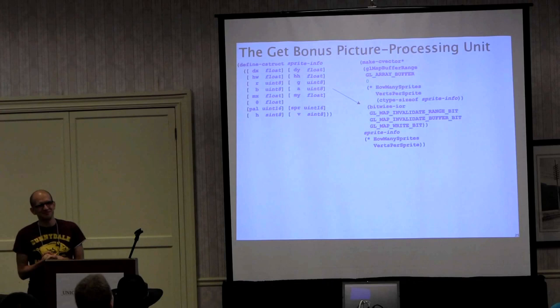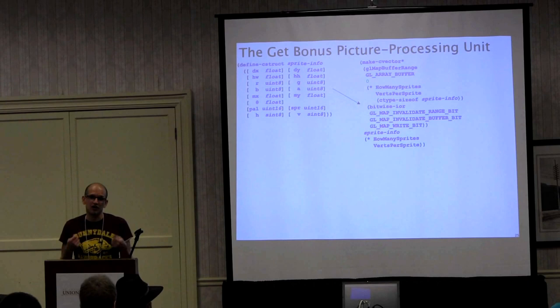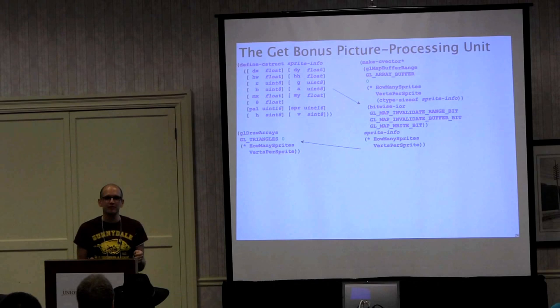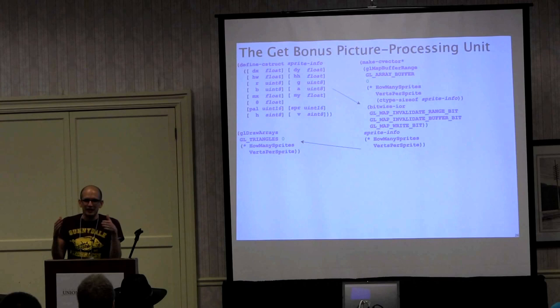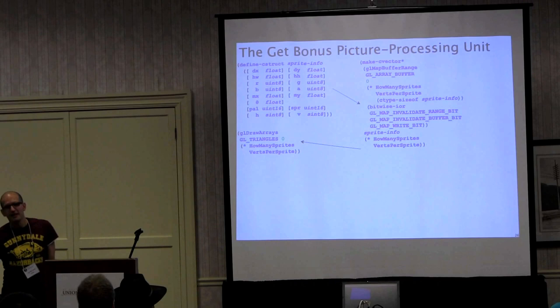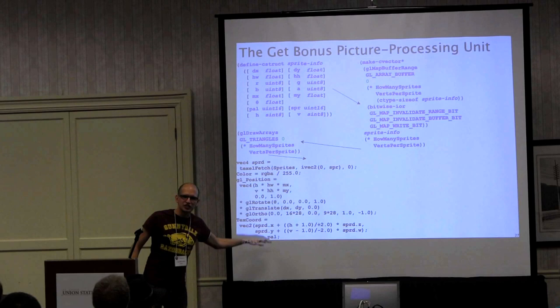GetBonus is designed to simulate the hardware of the Super Nintendo, so it makes a single OpenGL drawing call per frame. Most modern games make maybe 100 or 200 calls. We can do all our drawing inside a single interaction with OpenGL. That goes to this shader, written in C — this is the entire shader, nothing left out, nothing deleted.